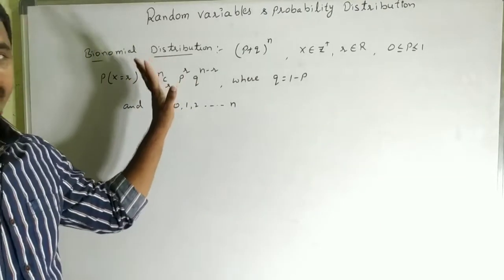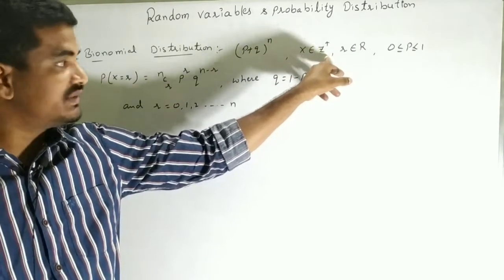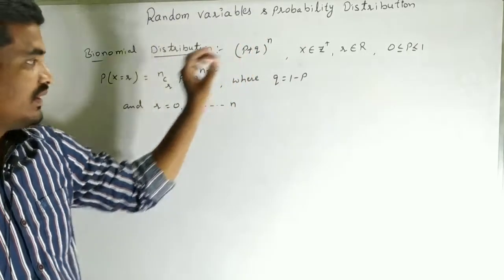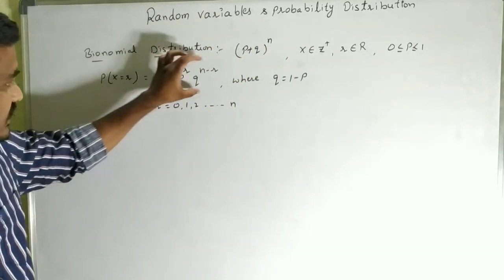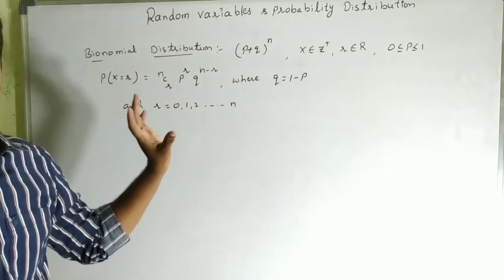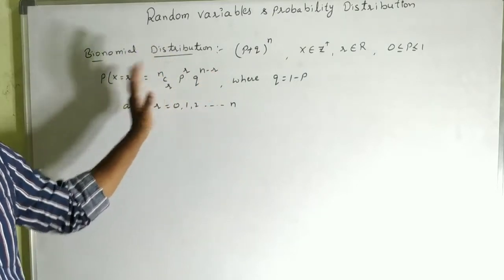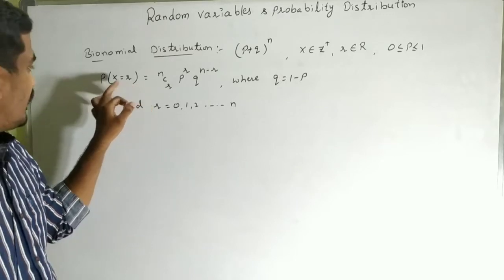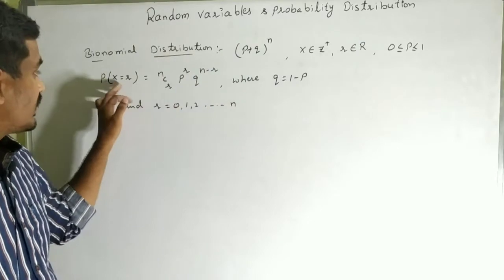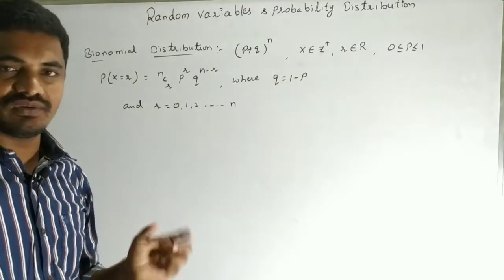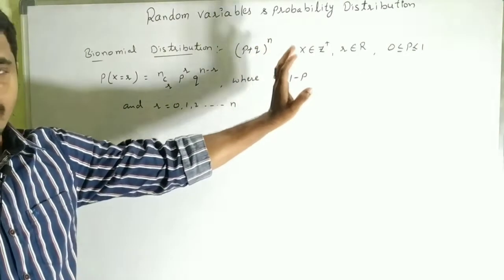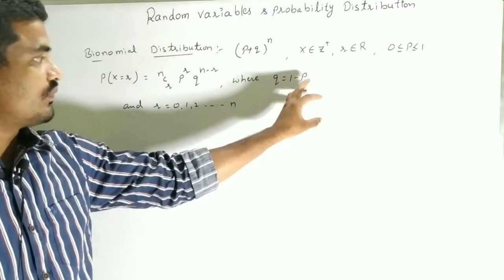Next concept: Binomial distribution. The binomial function is (p + q)^n. The general term is P(X = r) = nCr × p^r × q^(n−r). Here r = 0, 1, 2, ..., n giving terms nC0, nC1, nC2, nC3, and so on. Also, p + q = 1 and the sum of all probabilities equals 1.